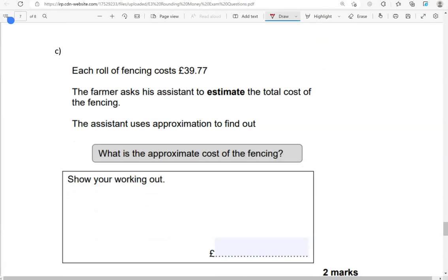Each roll of fencing costs £39.77. The farmer asks his assistant to estimate the total cost of the fencing. So, we're not going to write the exact figure. The assistant uses approximation to find out what is the approximate cost of the fencing. So, £39.77. Let's round it to the nearest whole pound. So, that's the pounds column. This will be the cut-off point. Looking on the right, we have 77, which is above 50 pence. So, we're going to round up. So, that 9, we add 1 to it. So, it becomes 10. So, 0 down and 1 carried over. 3 and 1 is 4. So, that's 40 pounds.